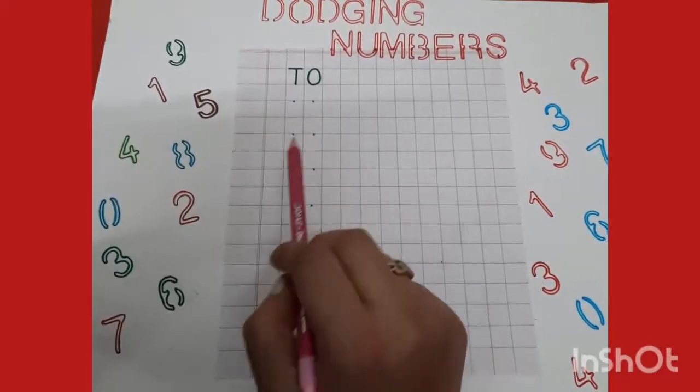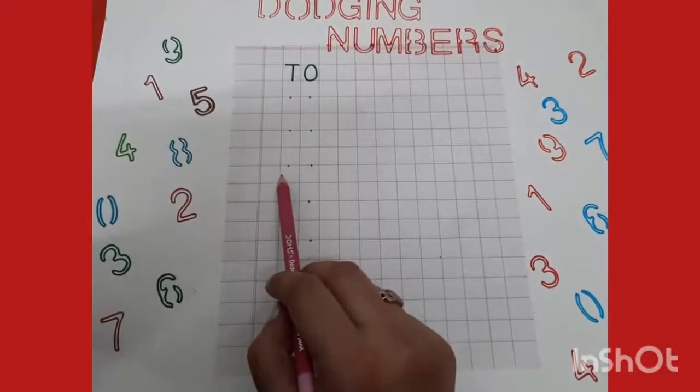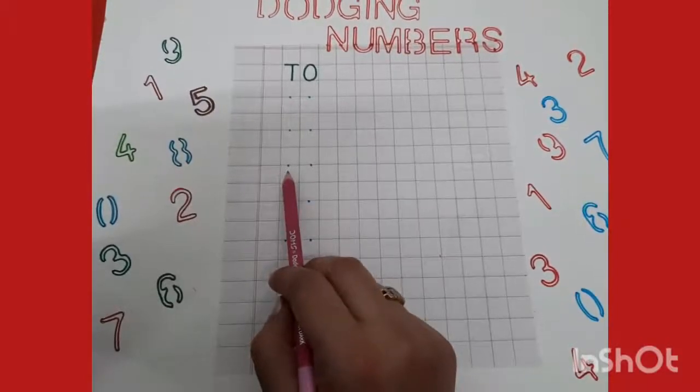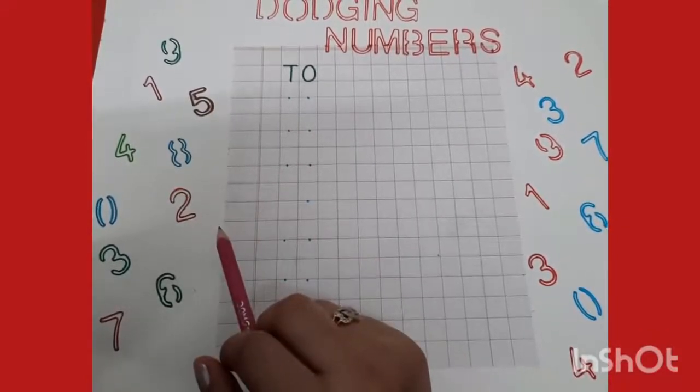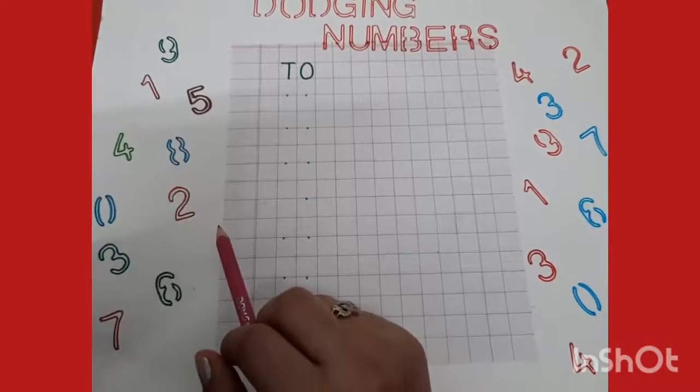Third number is three, one, thirty-one. Three, one, thirty-one.